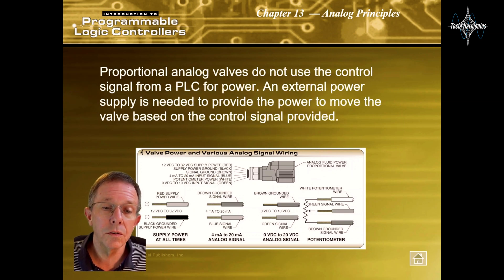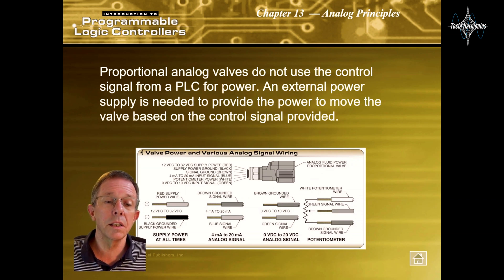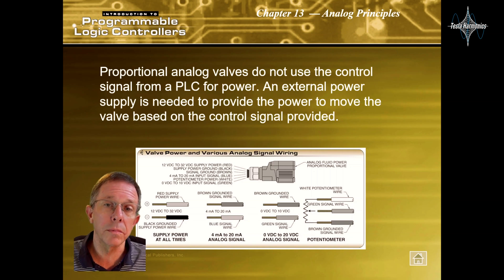Proportional analog valves do not use the control signal from a PLC for power, and external power supply is needed to provide the power to move the valve based on the control signal provided.